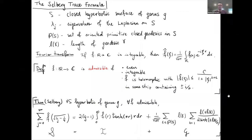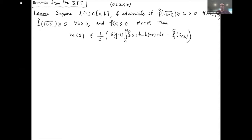The important thing to remember is that the trace formula is an equality: the spectral term S equals some integral term I plus a geometric term G. It's possible to prove inequalities regarding spectral invariants — lambda one, its multiplicity, the systole, and the kissing number — by using functions f satisfying certain sign patterns. Here is an example of a statement we use for bounding the multiplicity.